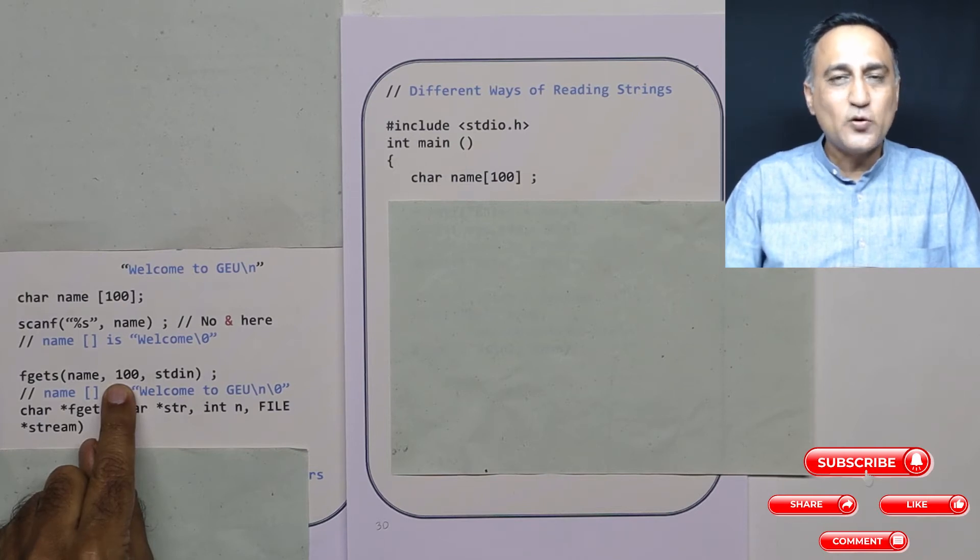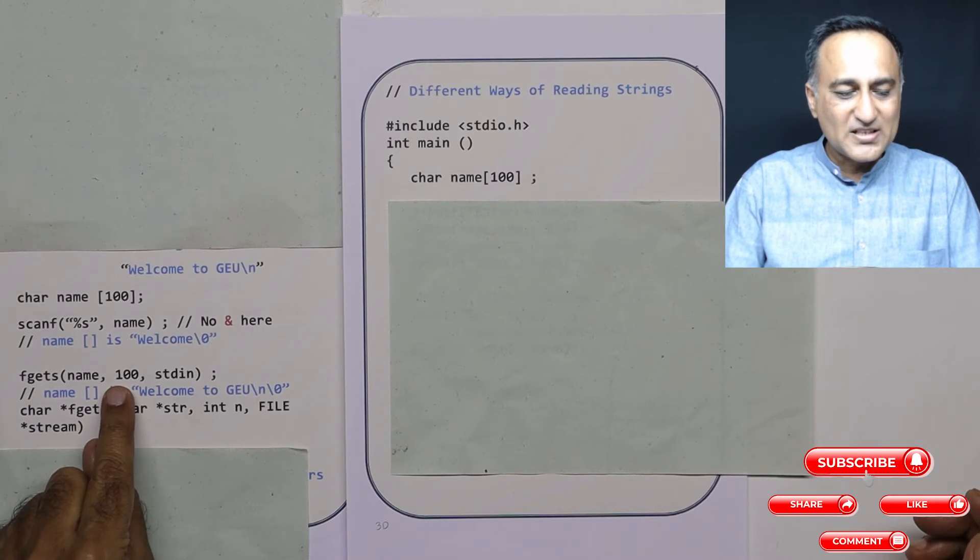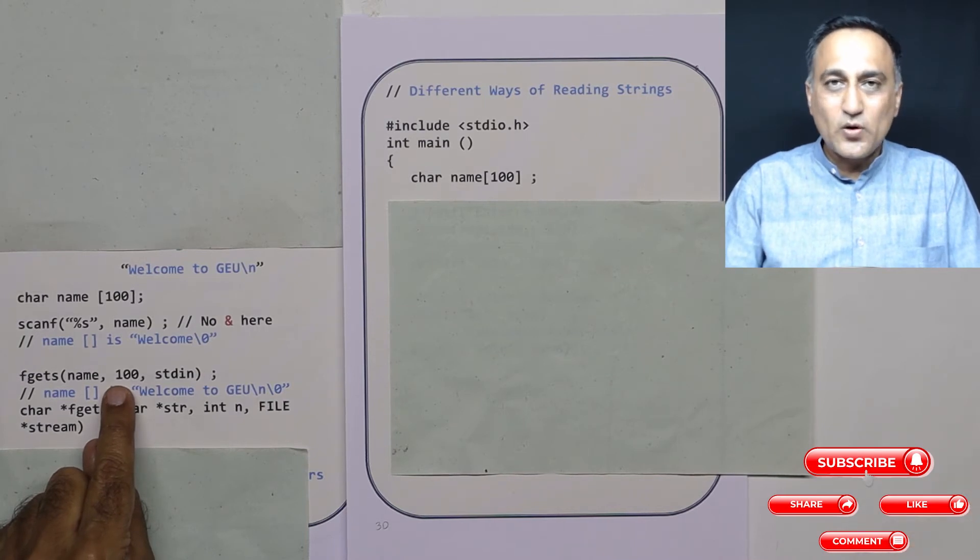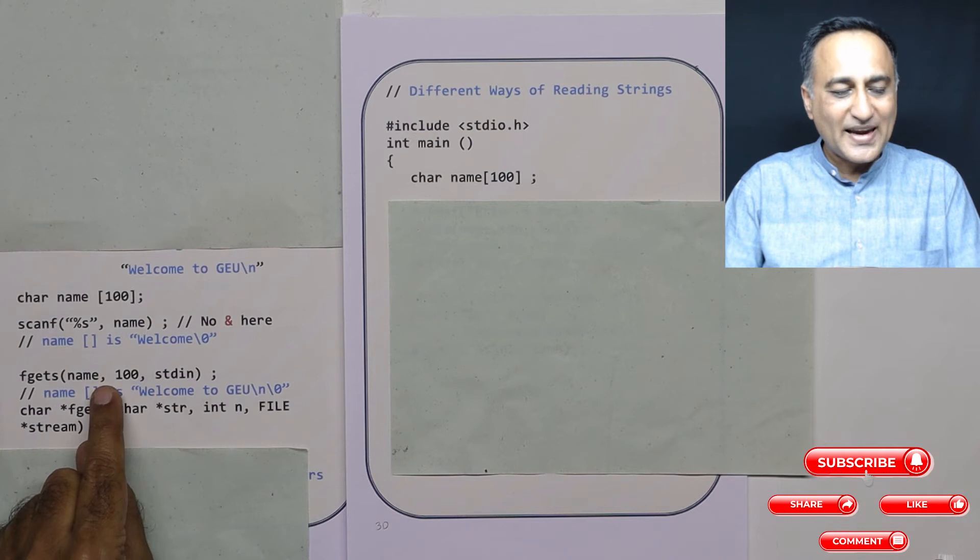Now n indicates the maximum number of characters minus one a user is allowed to enter, or the number of characters it accepts. You can enter more than 99 or whatever it is, but it is only going to accept that many characters. So suppose it is 100, fgets will only accept 99 characters including the enter key you have pressed. After the enter key is pressed, fgets will automatically add at the end of the string a null character.